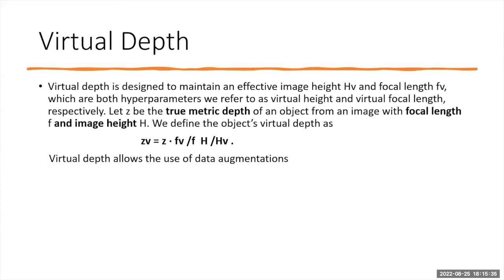Virtual depth is an important concept that differentiates the Faster R-CNN from the Cube R-CNN model. Virtual depth is used to maintain an effective image height and focal length, which we call virtual height and virtual focal length. In this equation, z is the true metric depth, f is focal length, and h is image height. This virtual depth concept allows us to use data augmentation.